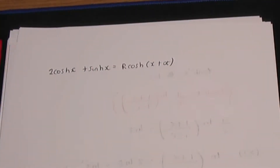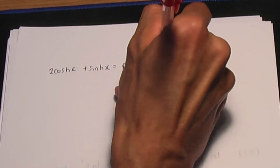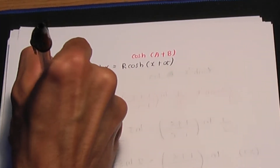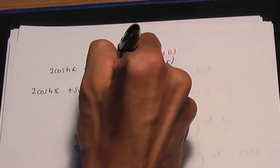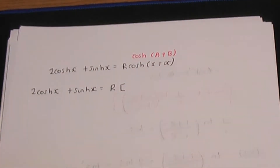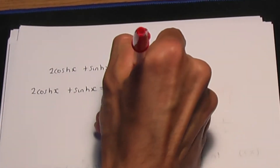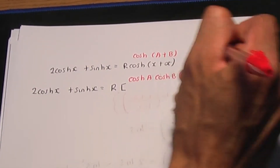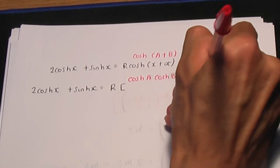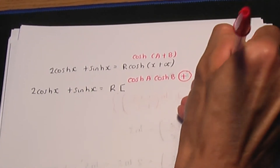Remember the first step: expand hyperbolic cos(x + α) using the identity for hyperbolic cos(a + b). On the left we have 2 hyperbolic cos x + hyperbolic sin x. On the right, bearing in mind Osborne's rule, the identity should be hyperbolic cos a · hyperbolic cos b plus hyperbolic sin a · hyperbolic sin b.